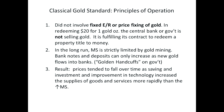The classical gold standard did not involve any fixed exchange rate or price fixing of gold. In redeeming $20 for one gold ounce, the central bank is not selling gold to keep the price stable — it's fulfilling its contract to redeem a property title to money. In the long run, the money supply is strictly limited by gold mining. Bank notes and deposits can only increase as new gold flows into banks. If you don't have gold mines, the other way gold flows in is through a surplus in the balance of payments. This was known as the golden handcuffs on government.